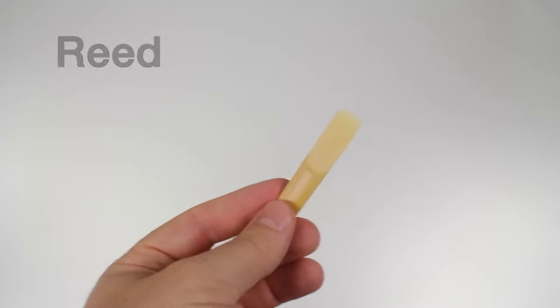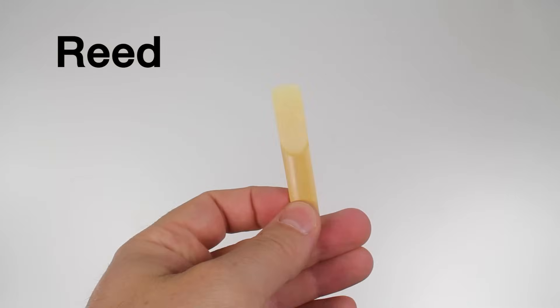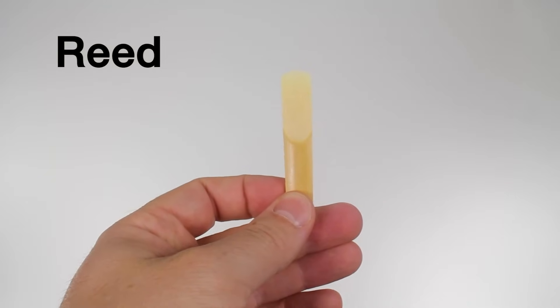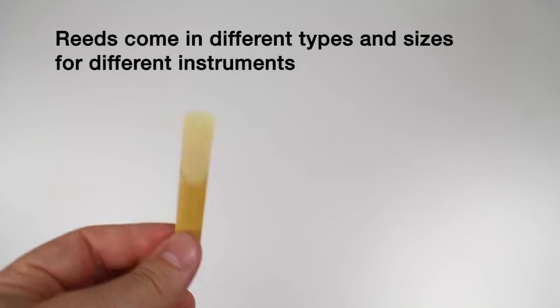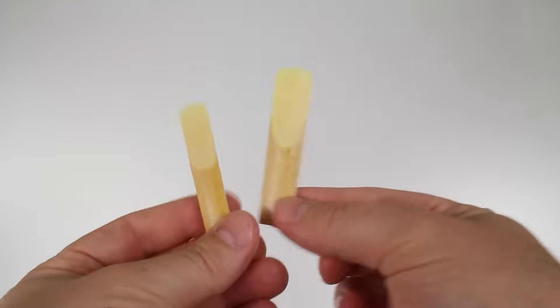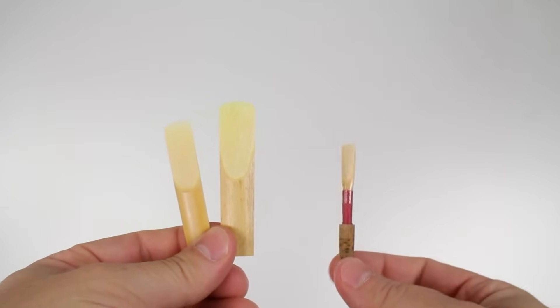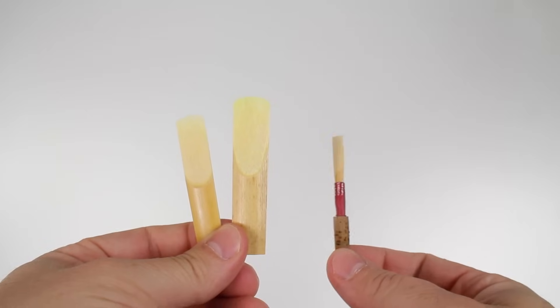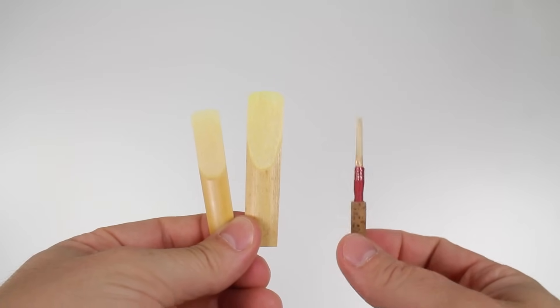This is a reed. A reed is a small, thin piece of wood-like material that's used by woodwind instruments in order to make a sound. Reeds come in different types and sizes for different instruments. For example, this is a clarinet reed, and this is an alto sax reed. You can see it's a little bigger. This is an oboe reed, and it looks kind of strange. It's actually two little reeds tied together. It's called a double reed.